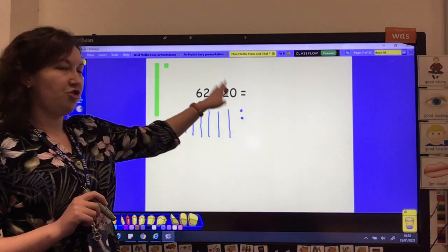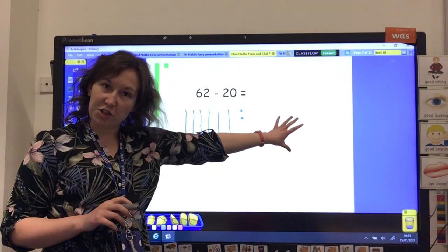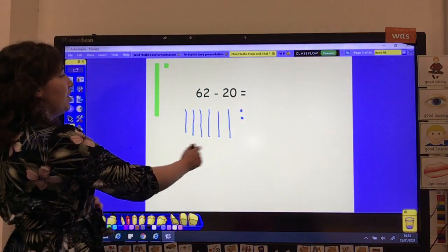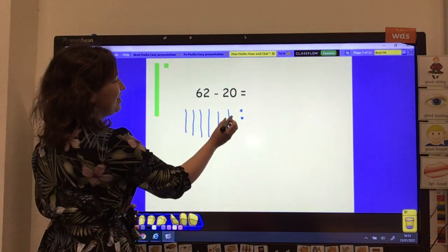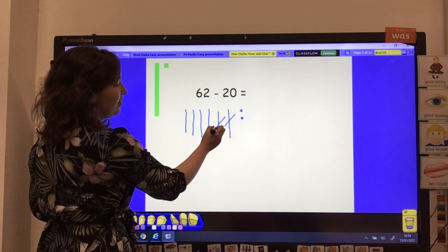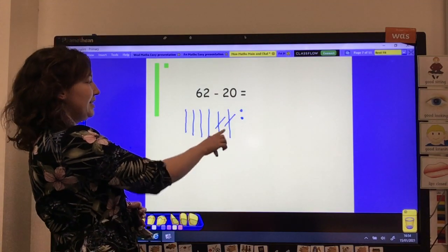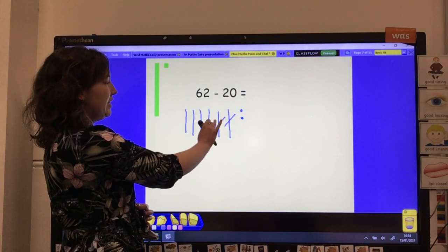And remember, we are subtracting. So we're not going to draw another 20. We are taking them away. We're crossing them out. So 62 take away 20. Now remember, we are taking away a tens number. So we are crossing out tens, not the ones. Let's see what we've got left. So we're taking 20 away.